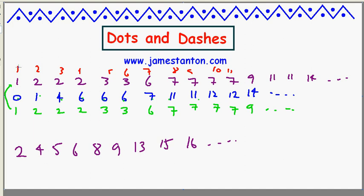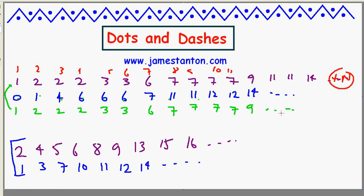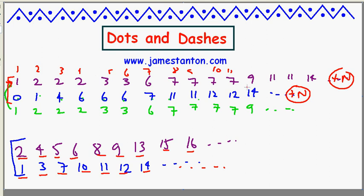And I'll do the same thing for the blues — the counting numbers in red plus the blues. 1 plus 0 is 1; 2 plus 1 is 3; 3 plus 4 is 7; 4 plus 6 is 10; 5 plus 6 is 11; 6 plus 6 is 12; 14 and so on. There I have the two summation formulas. I took the purple numbers and added n to every one — the nth counting number — and I added n to each of the frequency sequence. And amongst the two sequences as a result, I get 1, 2, 3, 4, 5, 6, 7, 8, 9, 10, 11, 12, 13, 14, 15, 16. Every counting number appears, and it appears exactly once in one of the two sequences.